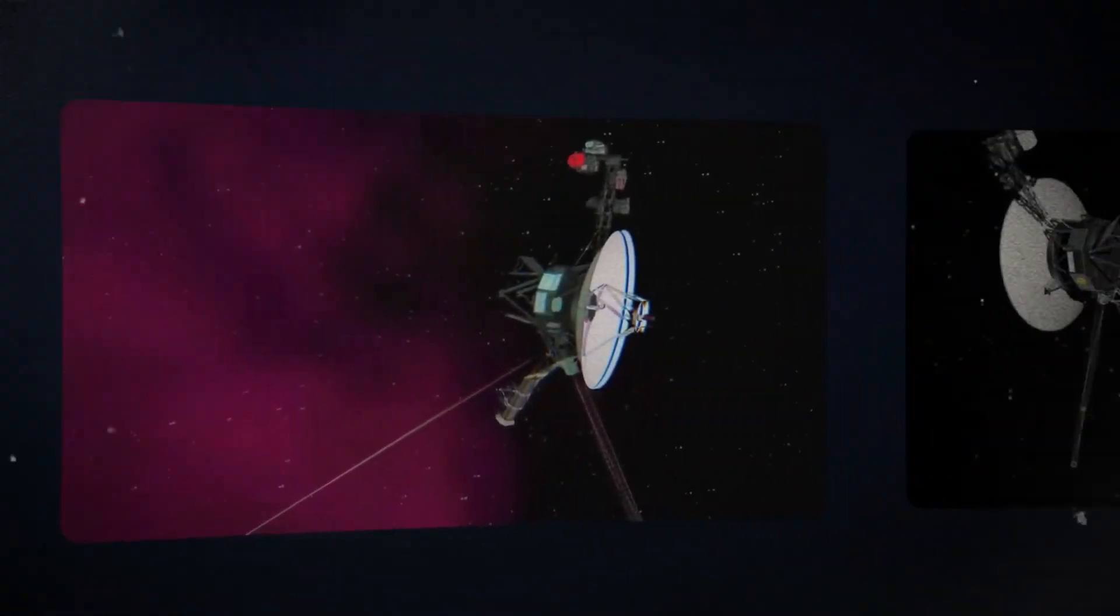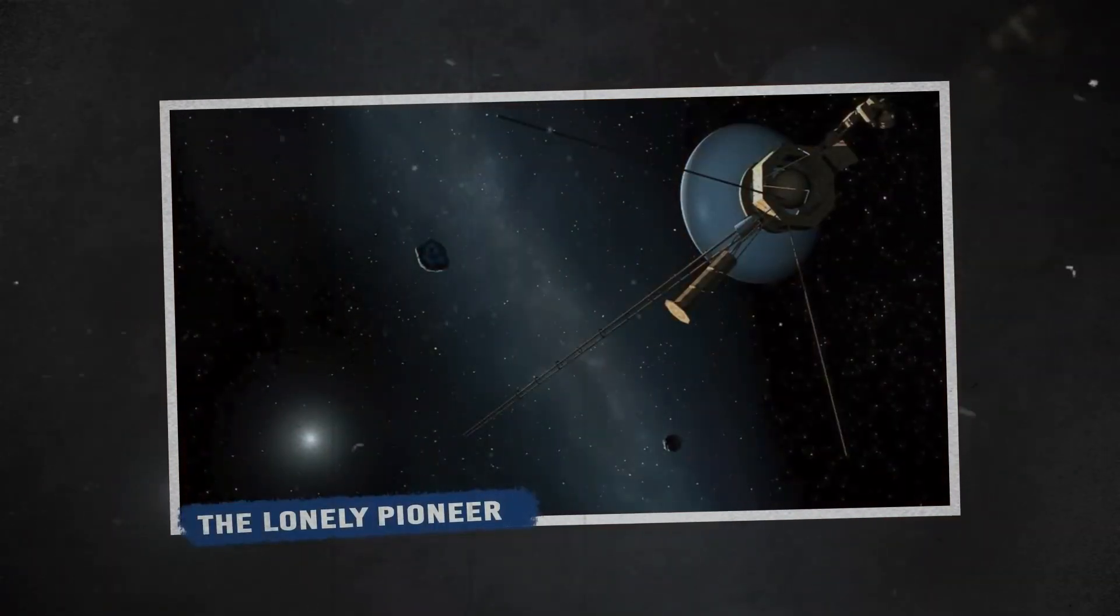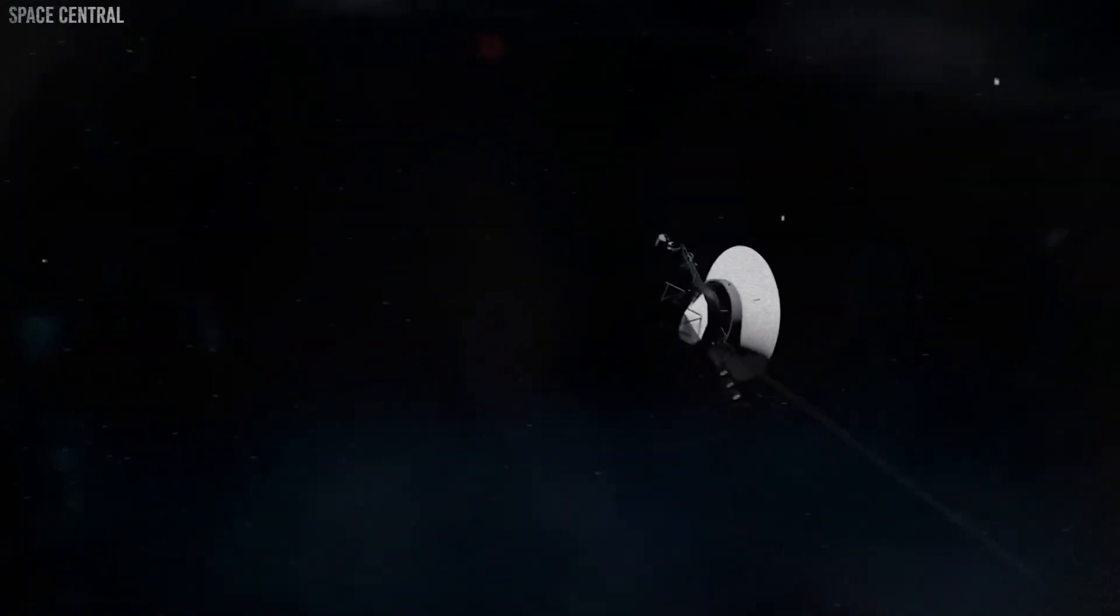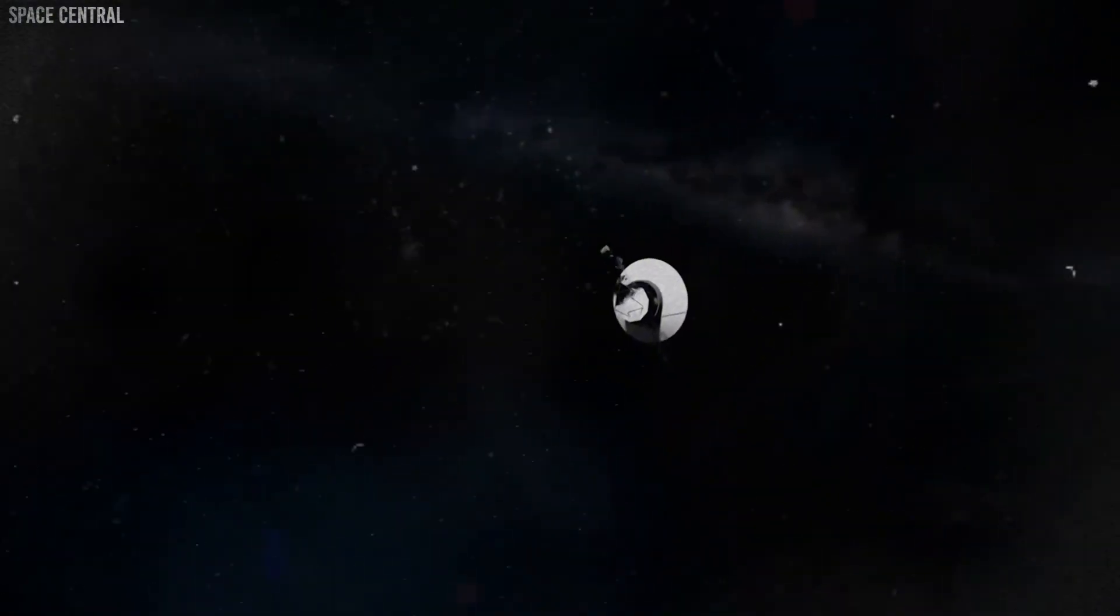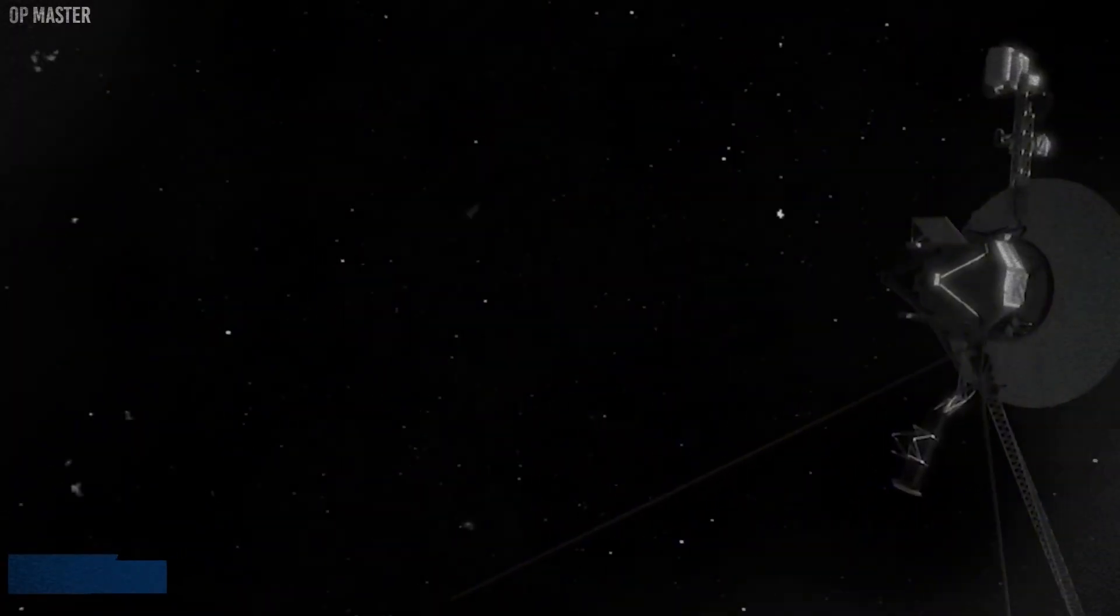Voyager 1 flew past Jupiter and Saturn, sending back breathtaking images along the way. This image shows the atmosphere of Jupiter. It also confirmed the presence of Jupiter's faint rings. Voyager discovered active volcanoes on Jupiter's moon Io.